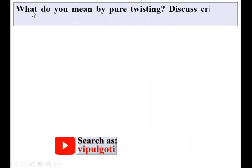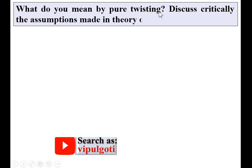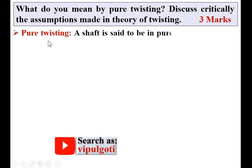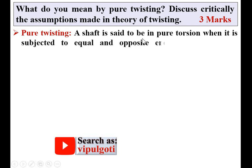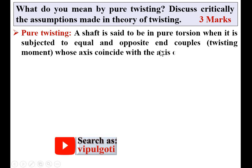Let's take the question: What do you mean by pure twisting? Discuss critically the assumptions made in the theory of twisting. The weightage of this question in examination is 3 marks. So first, the definition of pure twisting: a shaft is said to be in pure torsion when it is subjected to equal and opposite end couples.